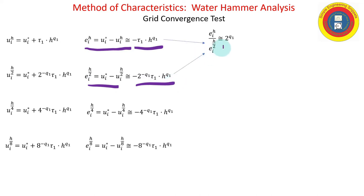And from that, we can combine that by ratio of the error terms to 2 to the q1 power. And taking the natural log or the logarithm of each side, I am able to solve for the observed convergence rate.